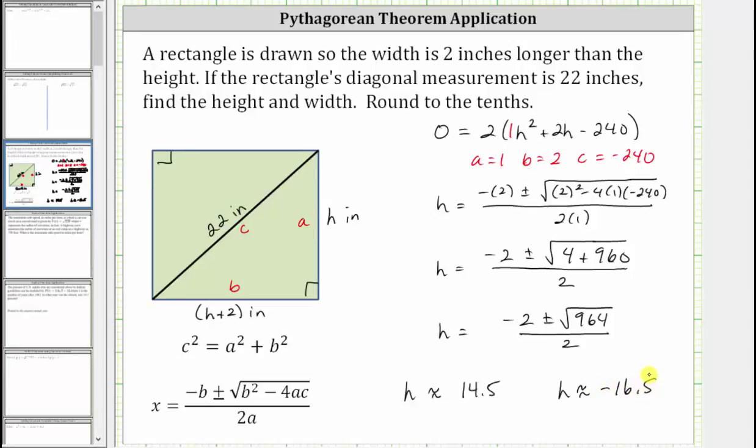But in our case, we can exclude this solution because we know h is a length. So we now know h is approximately 14.5.